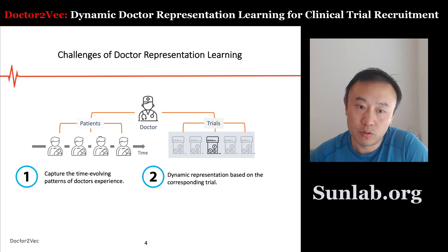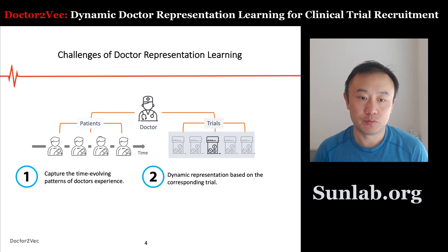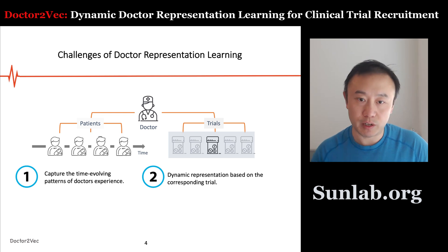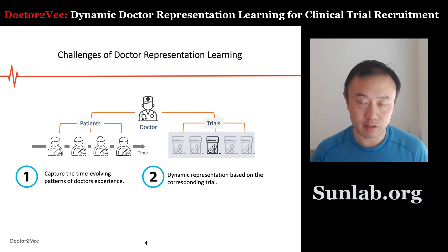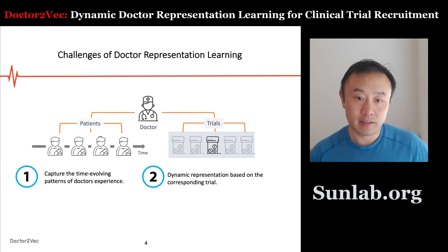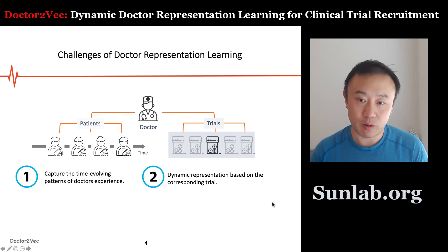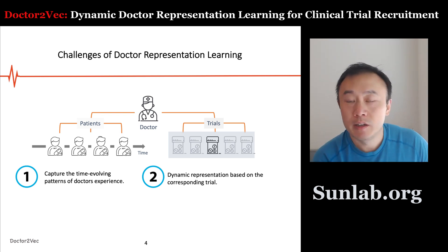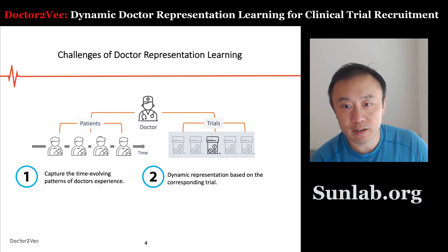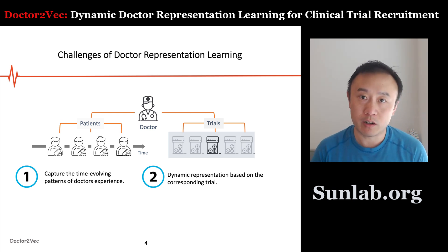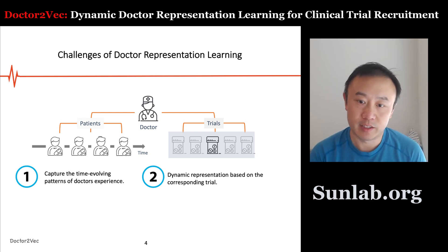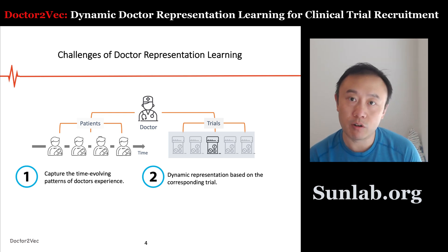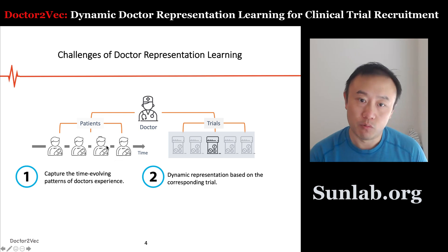The challenge to learn a doctor representation is twofold. First, we have to model the doctor's experience as some kind of time-evolving pattern, because patients come to see the doctor over time, and those visits are documented as electronic health records — a collection that evolves over time. Second, we want to capture a dynamic representation based on the corresponding trial, because a doctor may specialize in oncology but be less relevant for a completely different disease area. So the ranking and experience of a doctor will be updated depending on what trial you're trying to run.